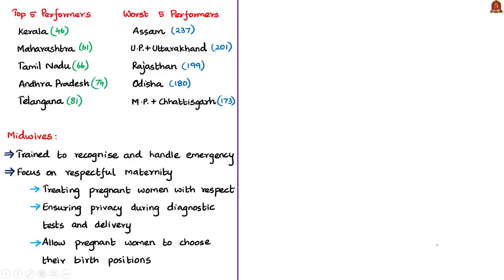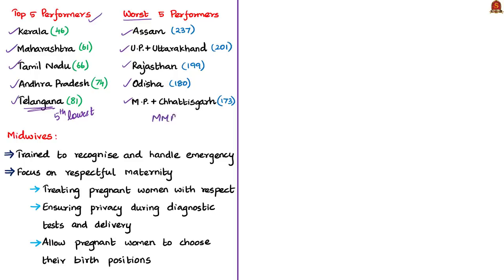Also try to know the top five and bottom five performers on maternal mortality ratio targets. The top five are Kerala, Maharashtra, Tamil Nadu, Andhra Pradesh and Telangana. Telangana is the state with the fifth lowest maternal mortality ratio in India. The bottom five are Assam, Uttar Pradesh, Uttarakhand, Rajasthan, Odisha, Madhya Pradesh and Chhattisgarh. This is based on the latest available data from 2014. Kerala is the best performer with 46 deaths per 1 lakh live births, and Assam is the worst with 237.